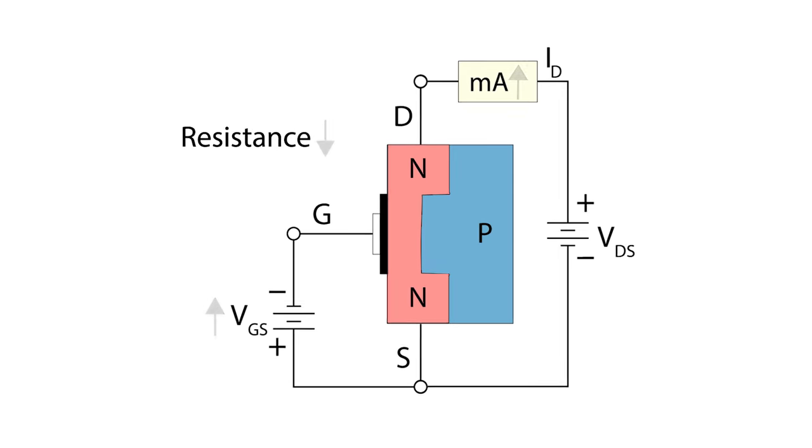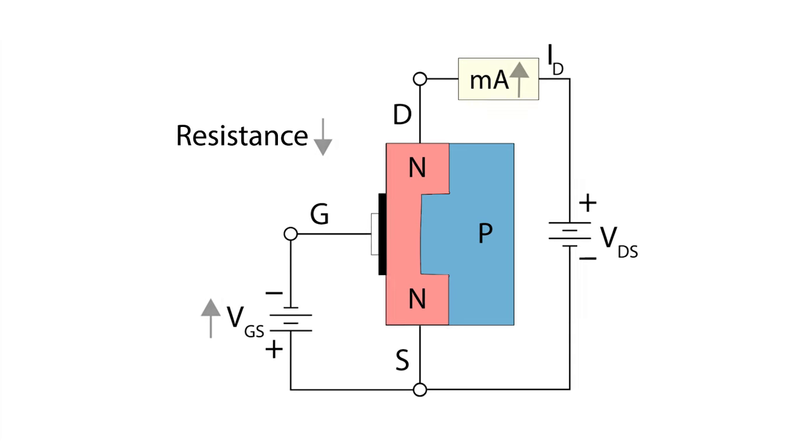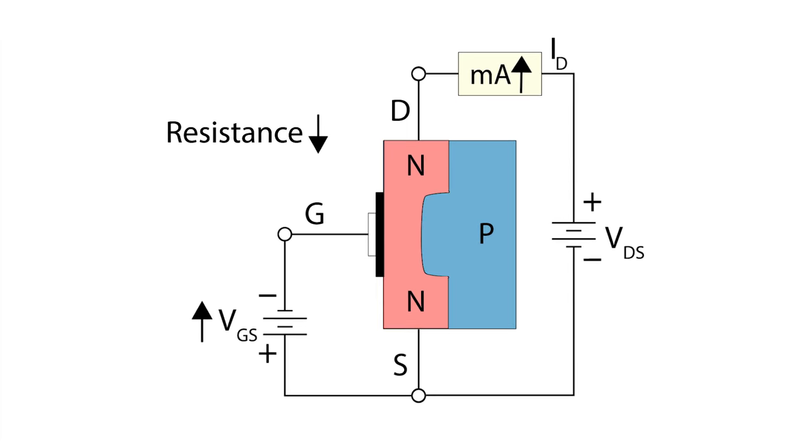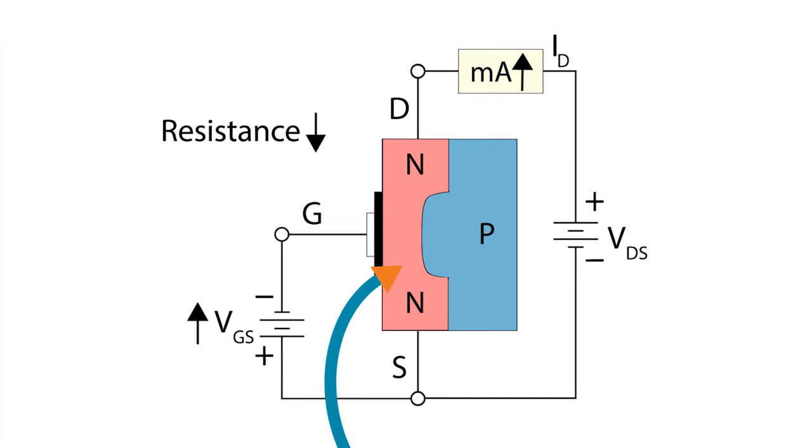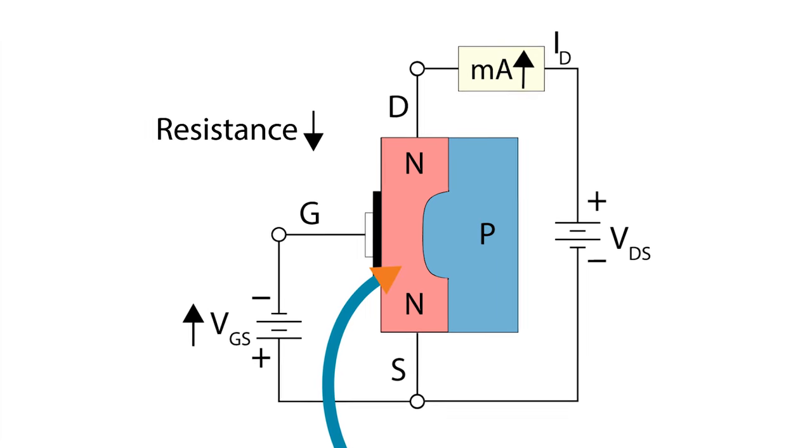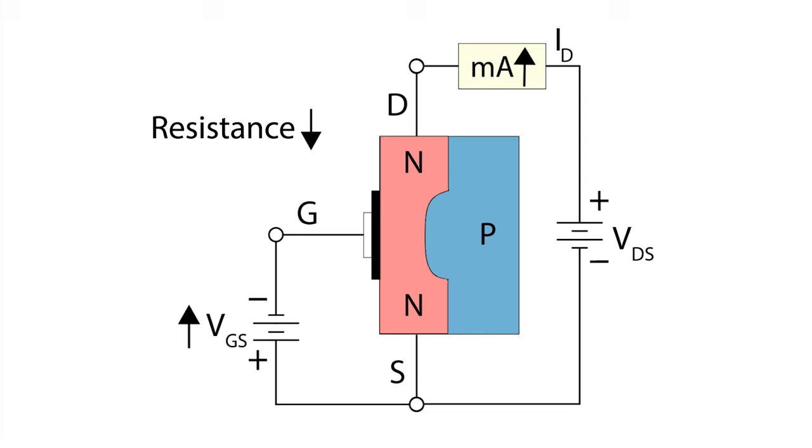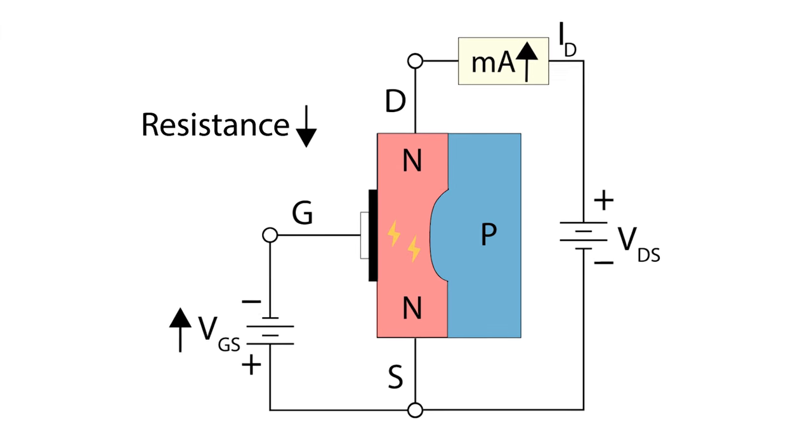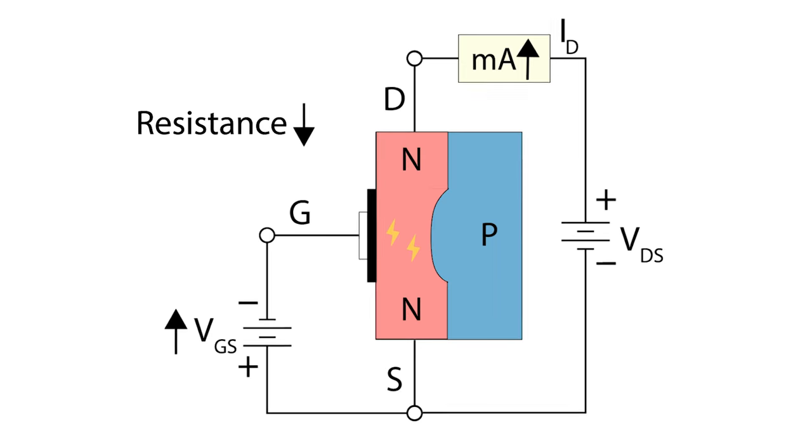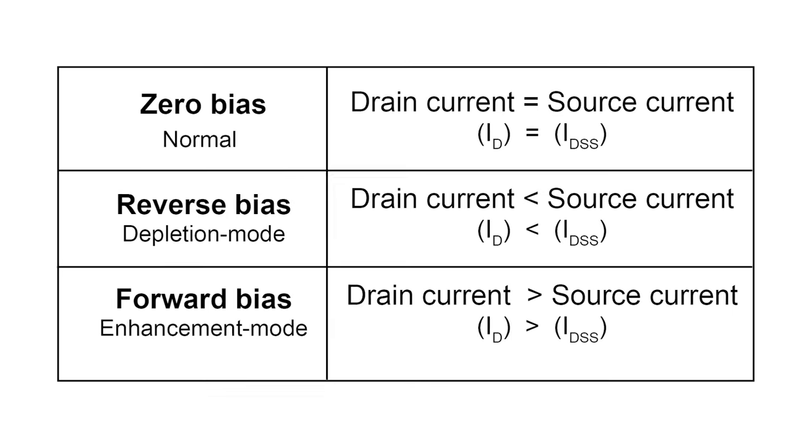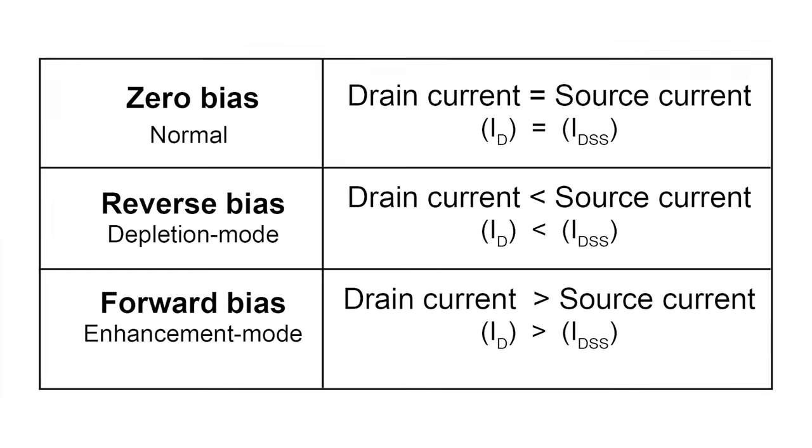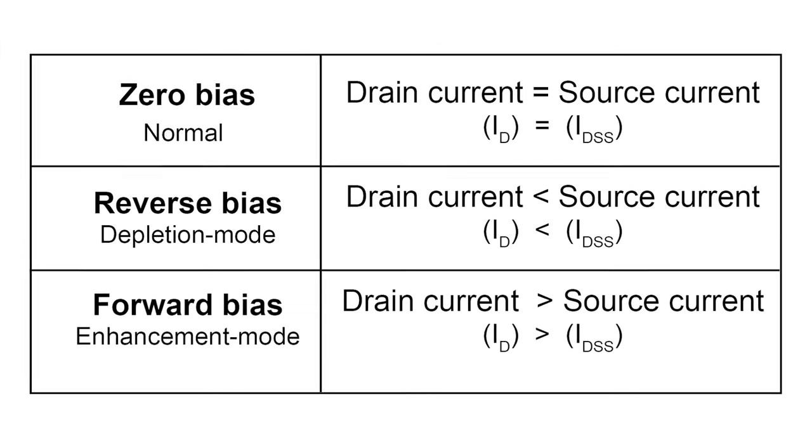Now here is where the D-MOSFET is different, when it operates in enhancement mode. The gate is connected to a voltage in forward bias. Polarity at the gate draws charge carriers from the substrate towards the channel, effectively widening the channel. The channel grows beyond its default size. This allows more current to flow through the channel than is usually possible. So D-MOSFETs can work with zero bias, reverse bias, or forward bias at the gate.